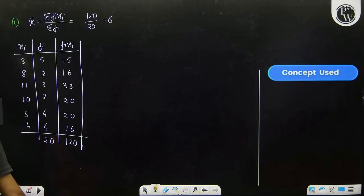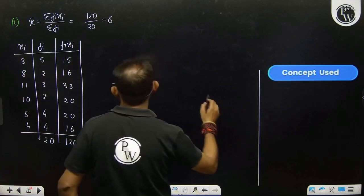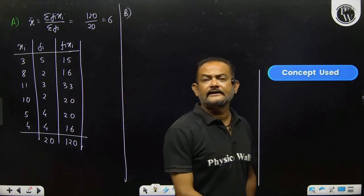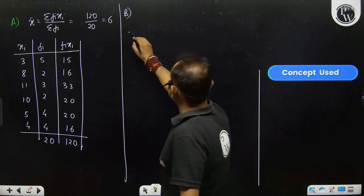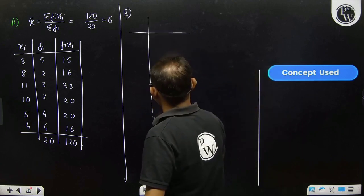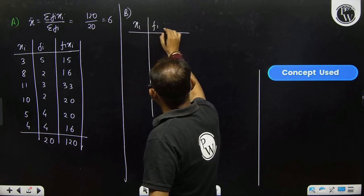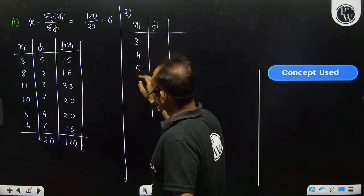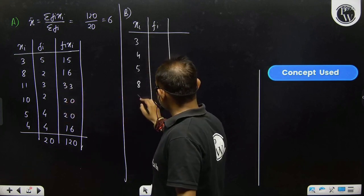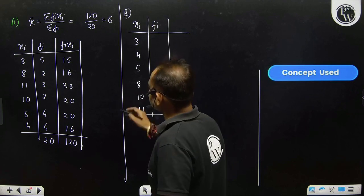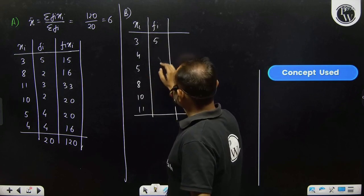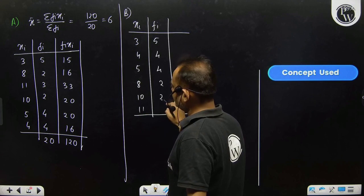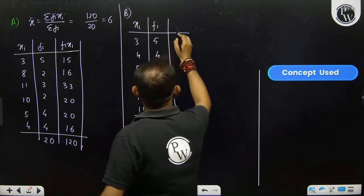For portion B, we find the median. To find median, first arrange the data in ascending order: xi values are 3, 4, 5, 8, 10, 11, with corresponding frequencies 4, 4, 5, 4, 8, 2, 10, 2, 11, 3. Now find the cumulative frequency.